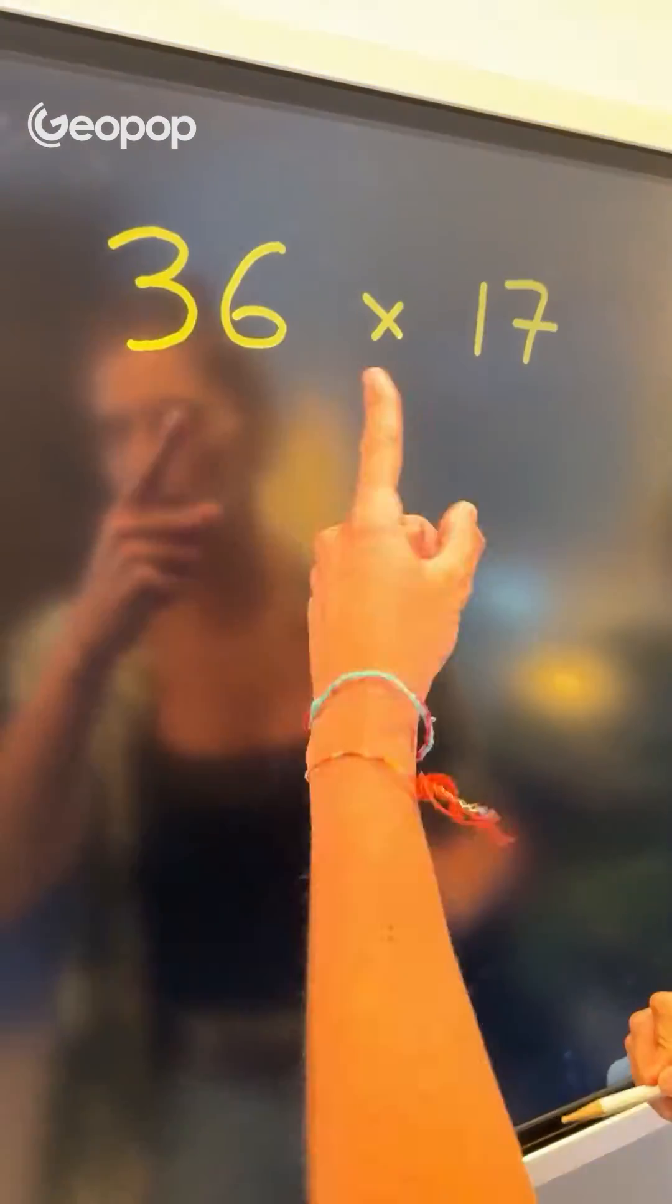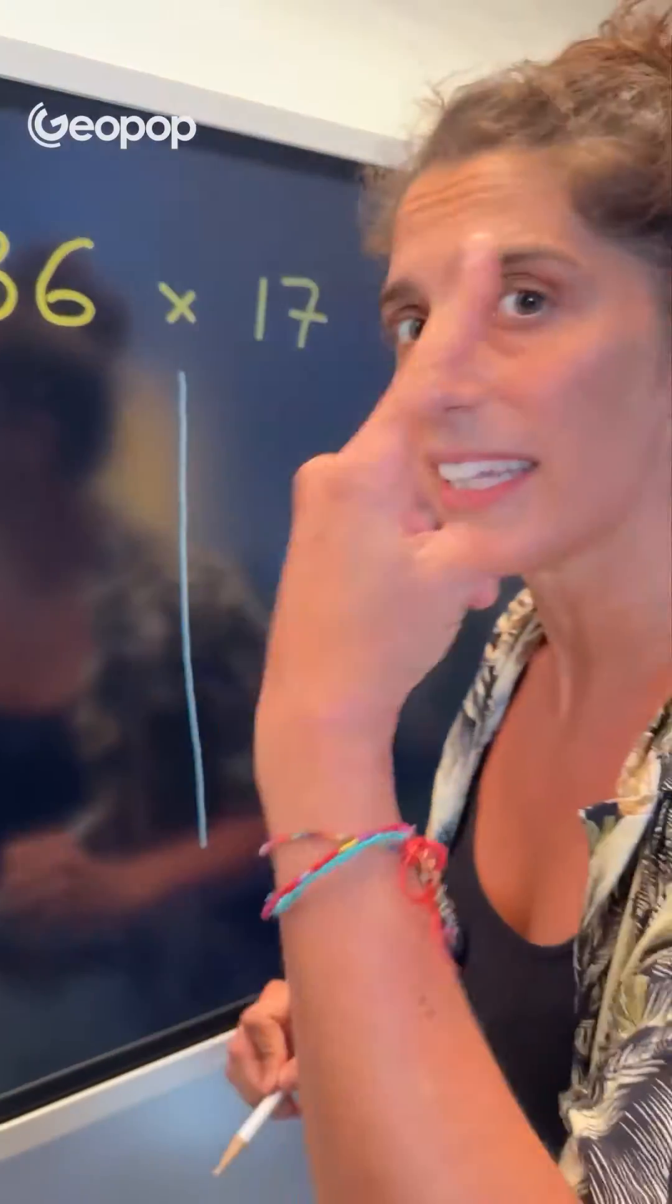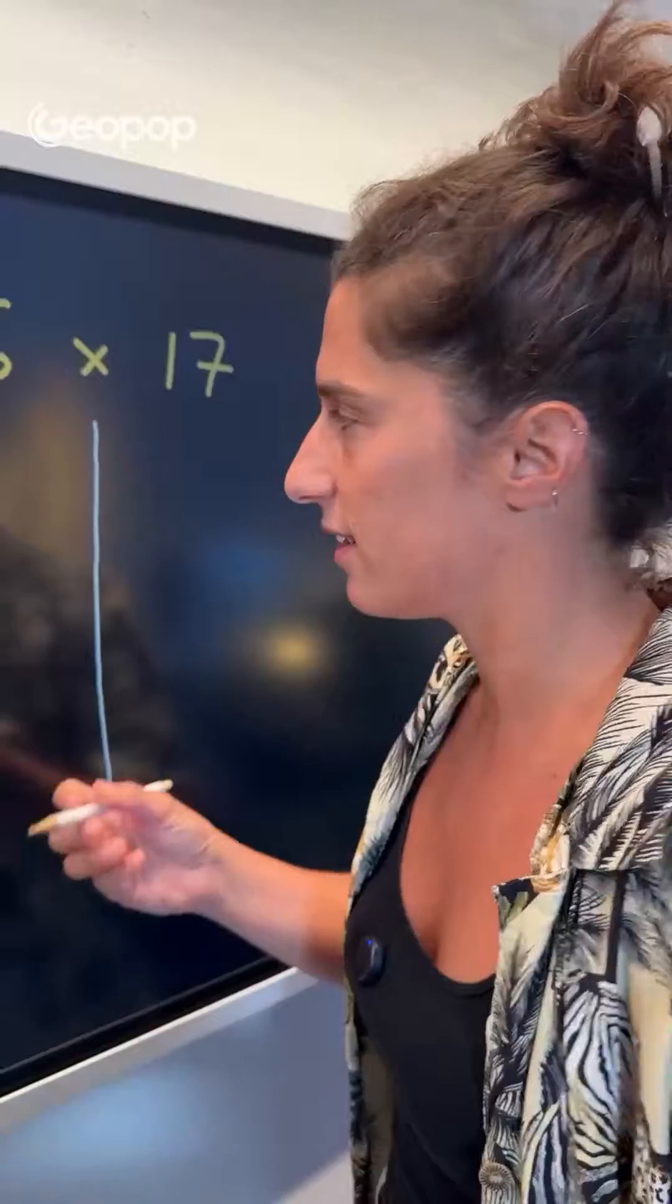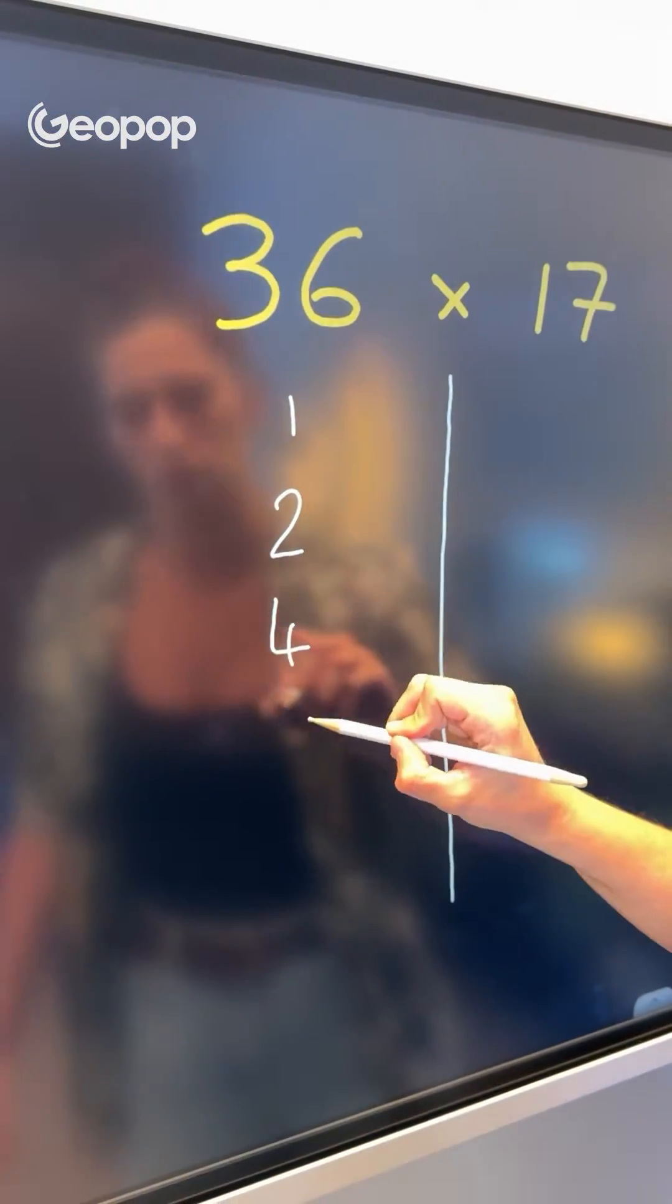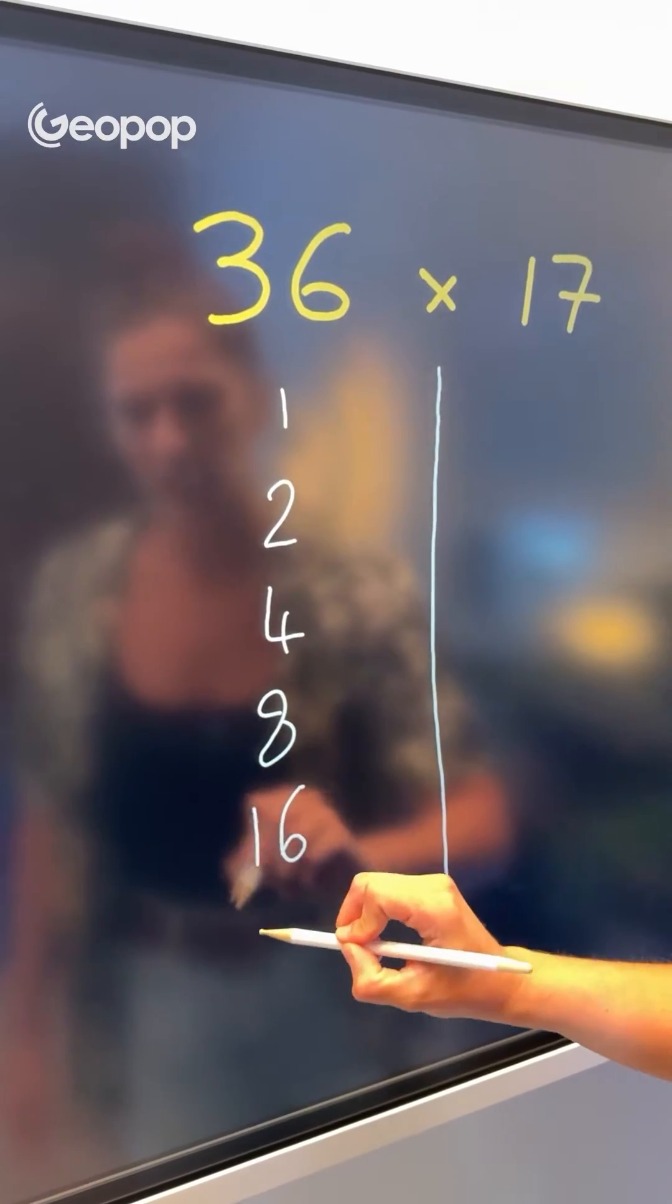So let's take a closer look at it. Let's start by writing down all the powers of 2 that are smaller than 36 under the number 36. So we've got 1, which we double to get 2, and then we double that to get 4, and then 8, 16, and finally 32.